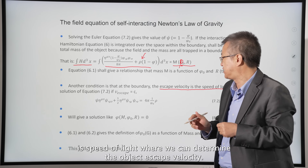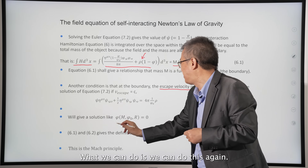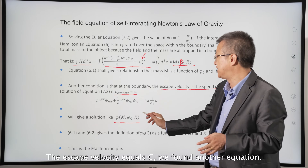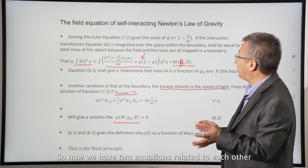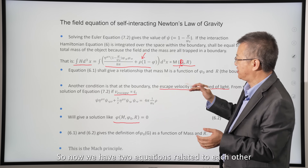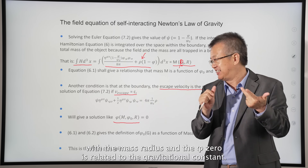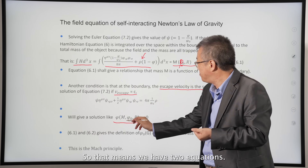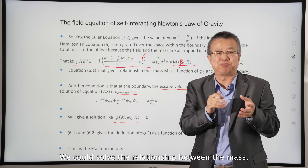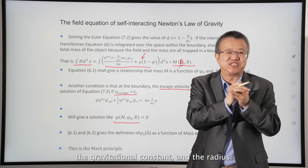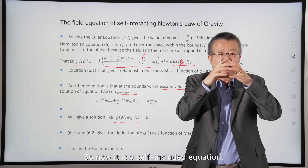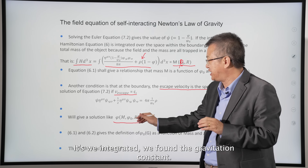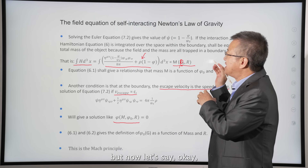Near the boundary, setting escape velocity equal to c gives another equation. Now we have two equations relating mass, radius, and Phi_zero. Phi_zero is related to the gravitational constant. So we can solve the relationship between mass, the gravitational constant, and radius. This is a self-contained system — we no longer need to input the gravitational constant externally; it is derived from integration.